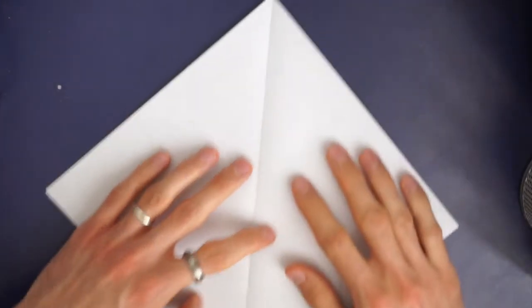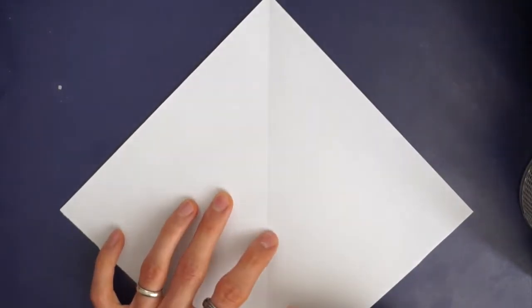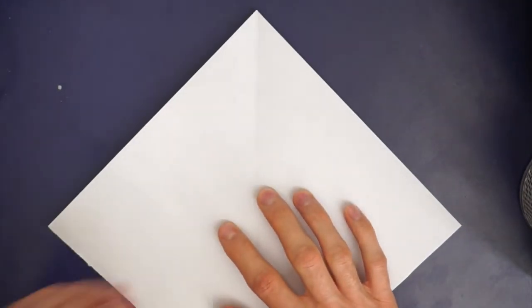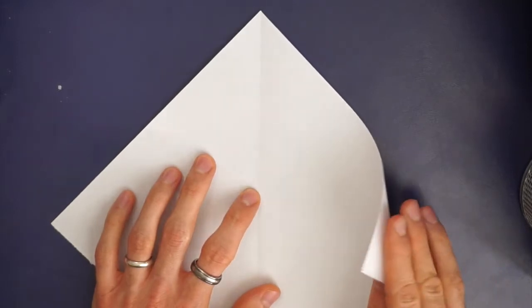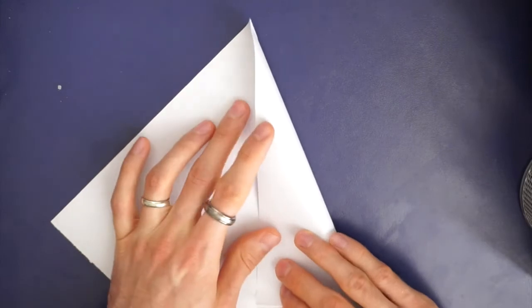So when you have your square you're going to want to turn it this way and you'll see that I've got this fold down the middle from where I made my square earlier and what you want to do is take one of your corners and fold it in like this.